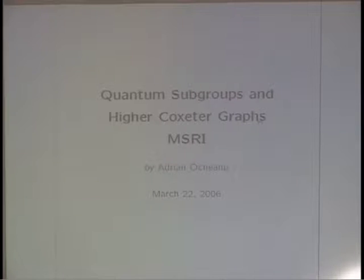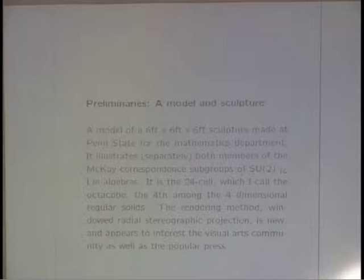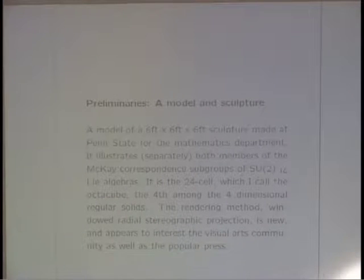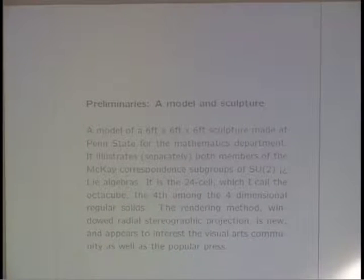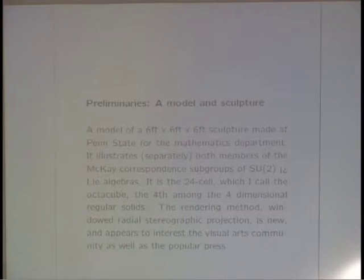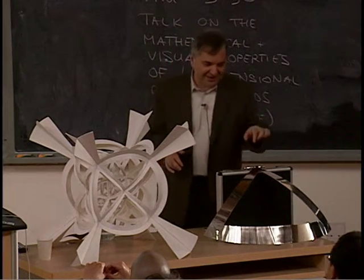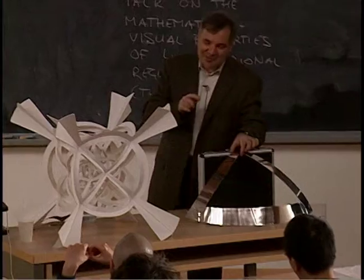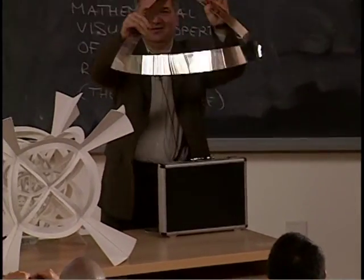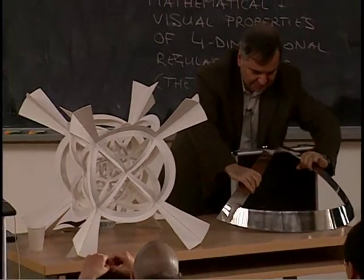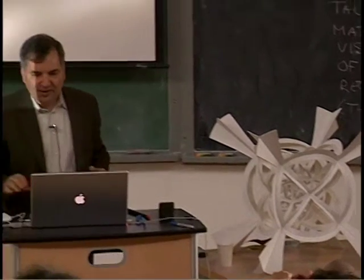Thank you very much. I would like to talk in the first three minutes about two of the members of the McKay correspondence, which are encoded in this sculpture. This was made at Penn State. It's a new way of rendering four-dimensional objects — a windowed radial stereographic projection. And here there's a piece of the Penn State sculpture. It's one of the little triangles which you see there. And it's a 24-cell, which I call the octa-cube.